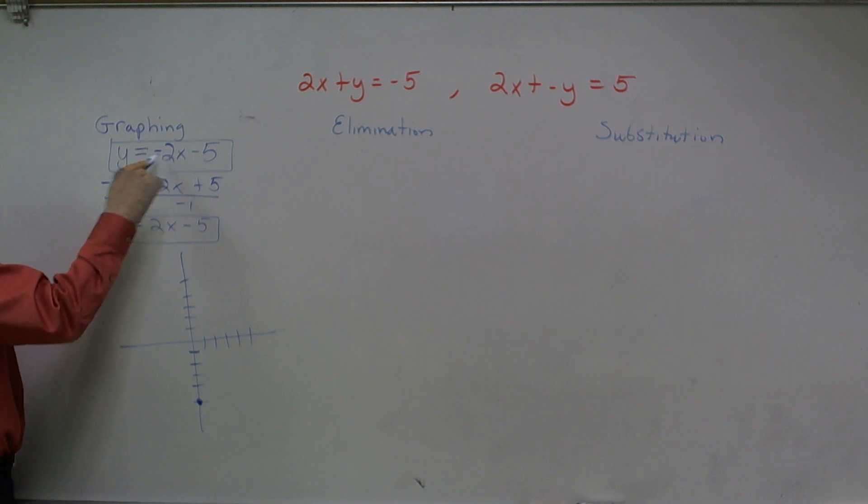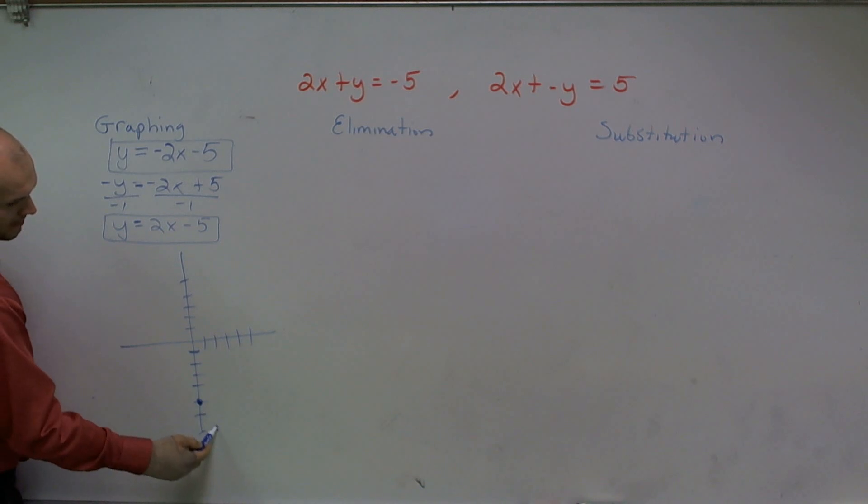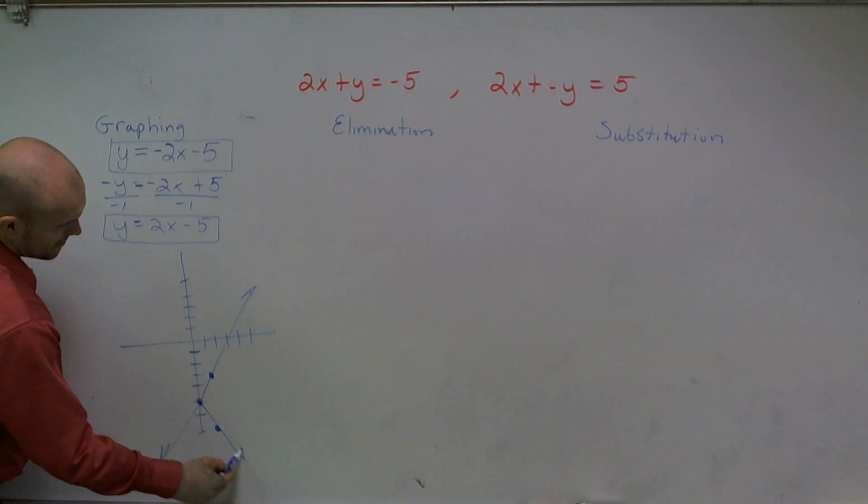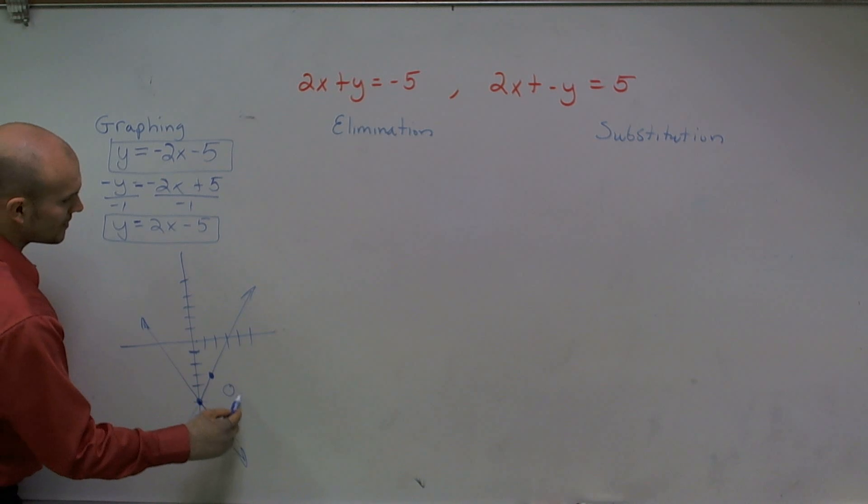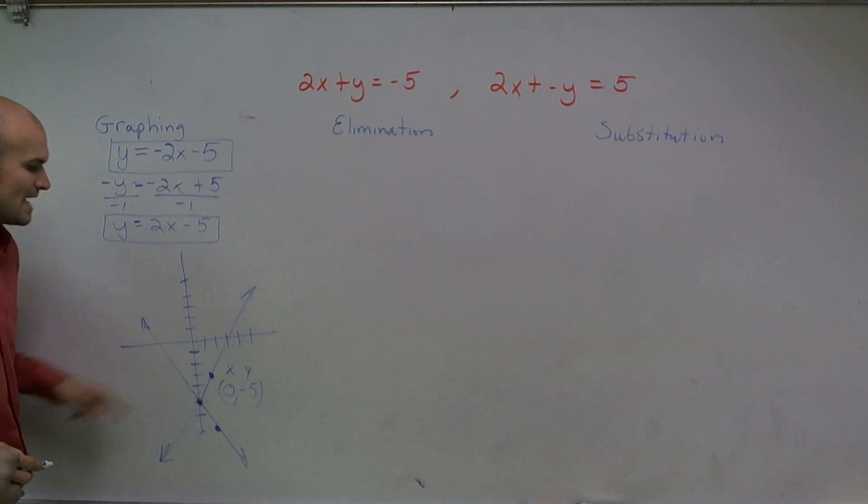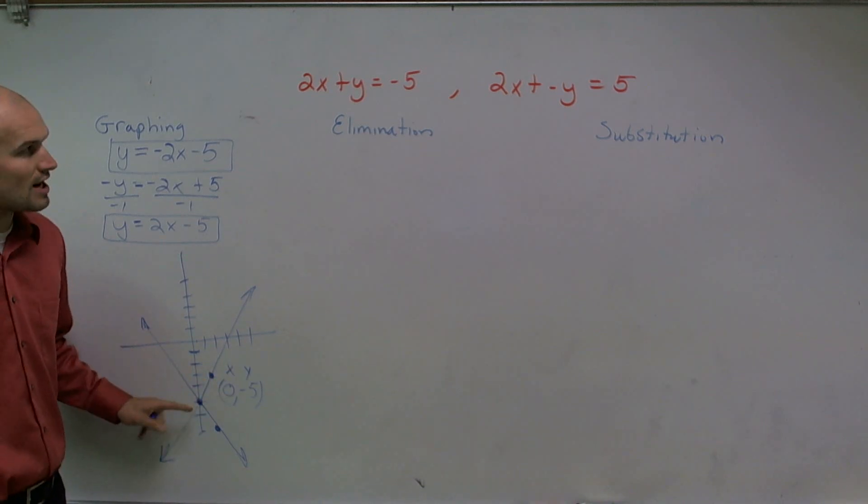Well here, my slope is down 2 over 1. And here it's up 2 over 1. So what we notice is actually these two graphs, they cross at the point 1, 2, 3, 4, 5, 0 comma negative 5. So the x value and the y value, x value is 0, y value is negative 5. So that's where they cross.